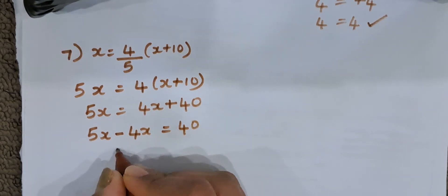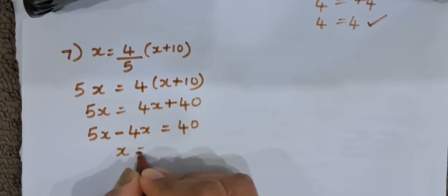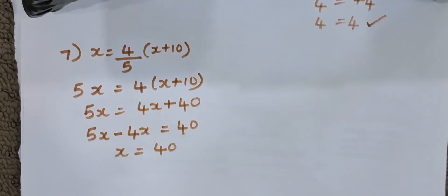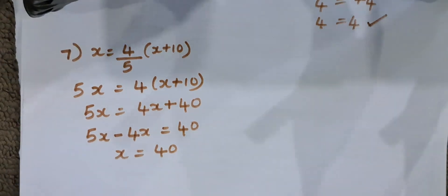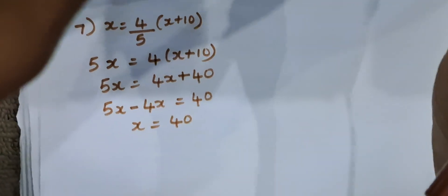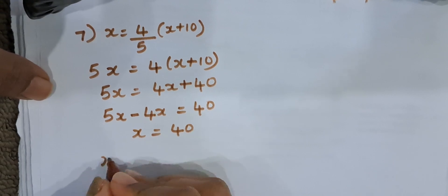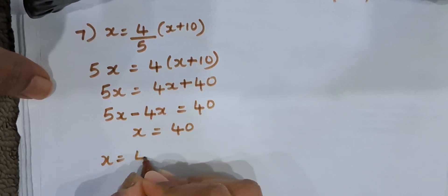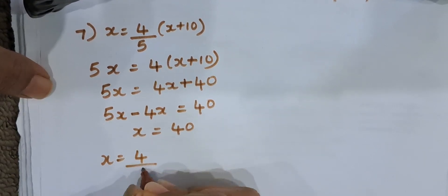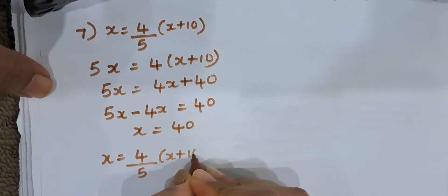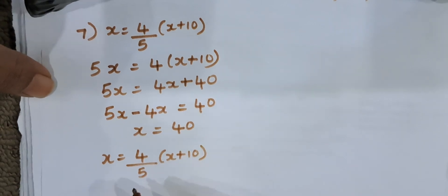5x minus 4x is equal to 40. That means the value of x is 40. Now we have to verify. To verify, we will put the value of x in the question. So, x is equal to 4 by 5 into x plus 10.